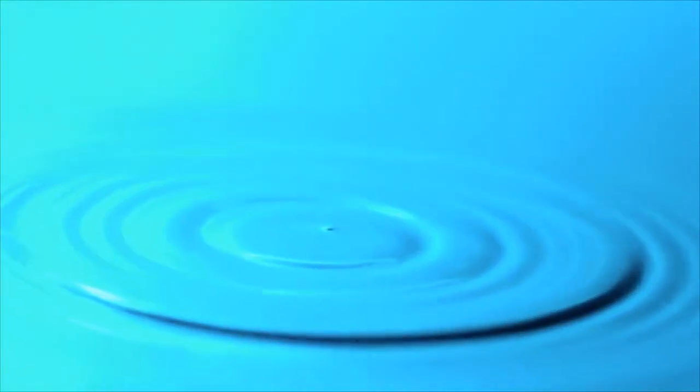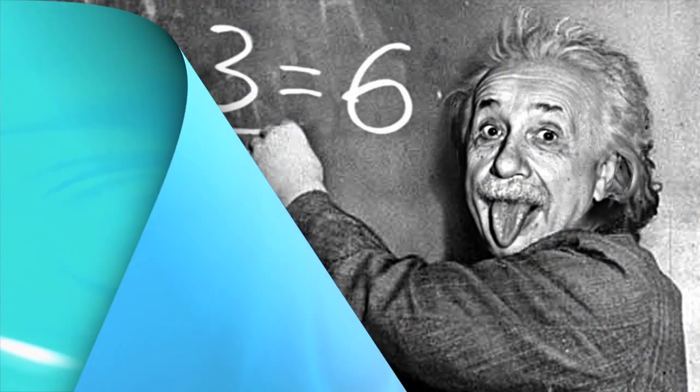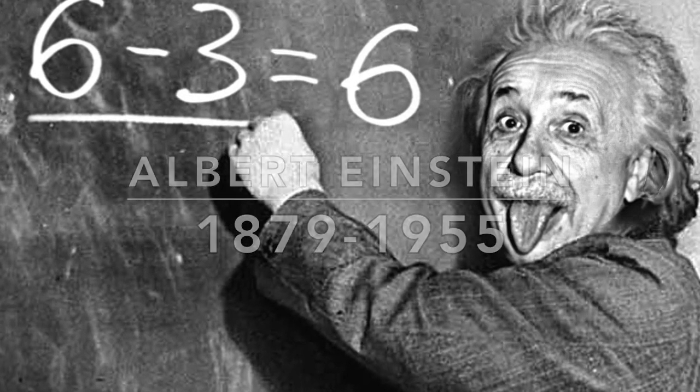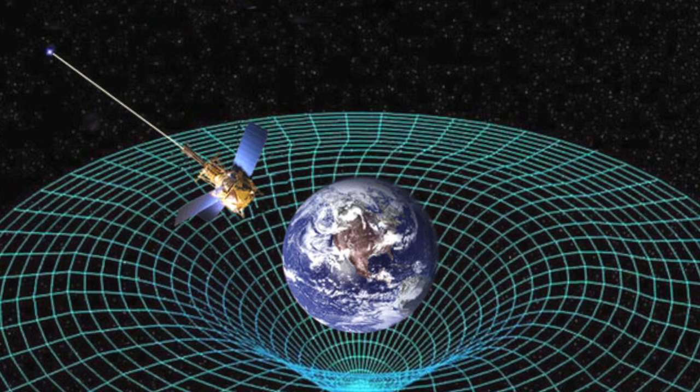I'm sure you've heard of the very smart famous physicist Albert Einstein. Well in 1915 Einstein published his theory of general relativity. Einstein then in 1916 predicted the existence of gravitational waves.